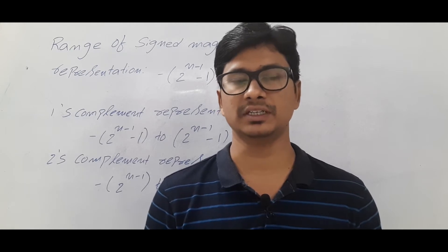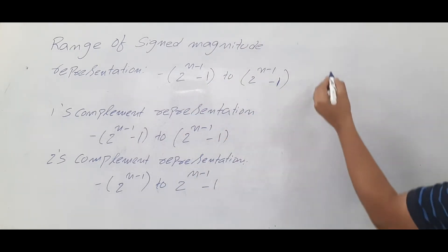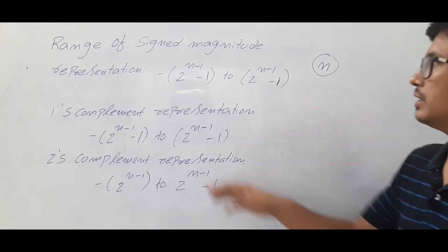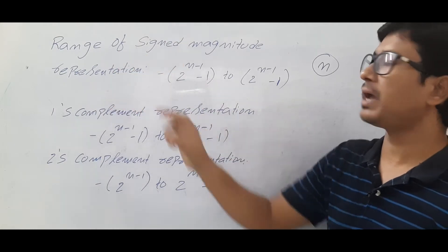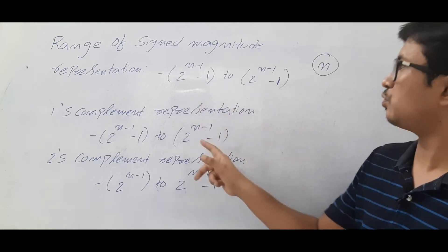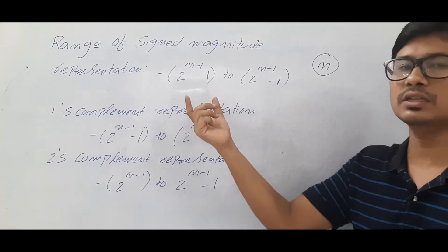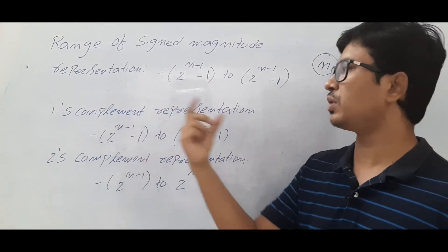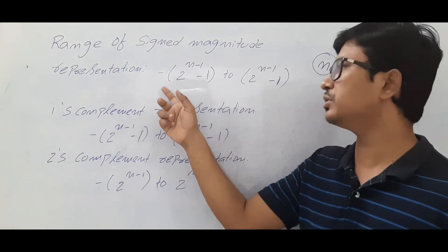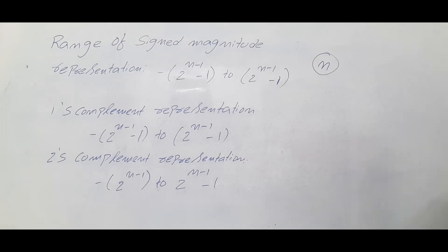Suppose if I have an n-bit number, the range of sign magnitude representation is minus 2^(n-1) - 1 to 2^(n-1) - 1, because using sign magnitude, one's complement, or two's complement representation we can represent both negative and positive numbers.